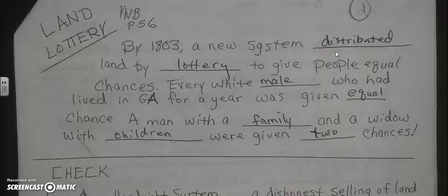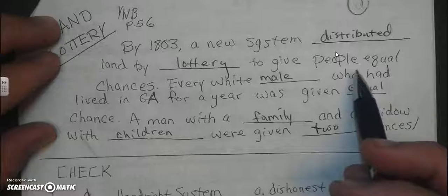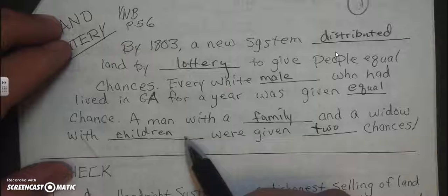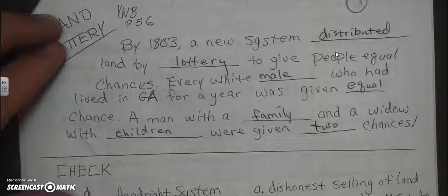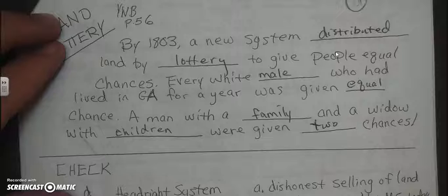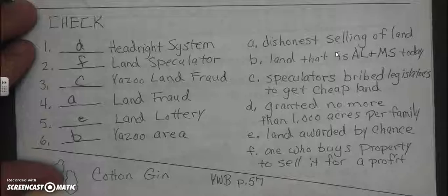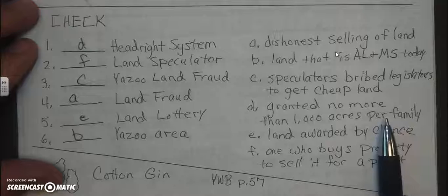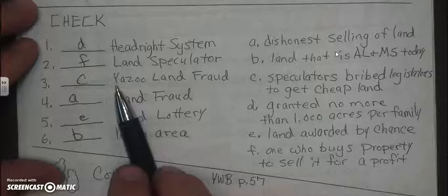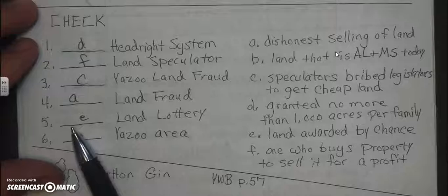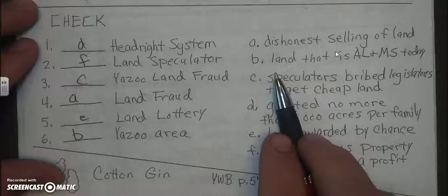Another way they distributed land — this time you had to buy the land — was the land lottery. By 1803, a new system distributed land by lottery to give people equal chances. Every white male who had lived in Georgia for a year was given an equal chance. A man with a family and a widow with two children were given two chances, depending on your family composition. The head right system granted no more than 1,000 acres per family. The Yazoo land fraud: speculators bribed legislators to get cheap land. The land lottery: land awarded by chance. The Yazoo area is what is Alabama and Mississippi today.